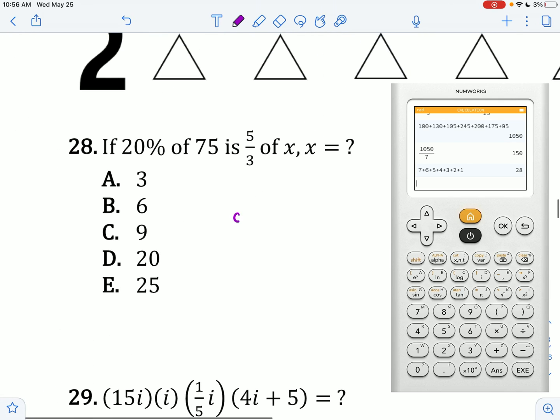If 20% of this number, 0.2 times 75, is 5 third of x, what is x? I can just do 0.2 times 75, and then multiply that by 3 over 5. I end up getting 9.